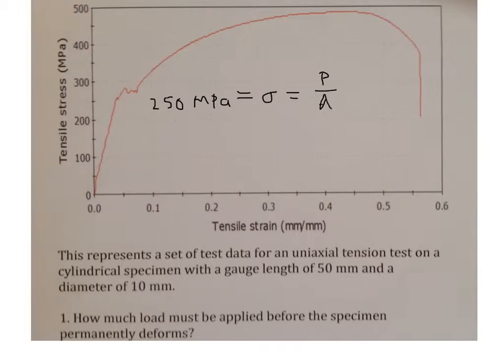And we know that the stress is equal to the load divided by the original area. So since the specimen is a cylindrical specimen with the gauge length of 50 millimeters and then a diameter of 10, we can compute the area from that value.